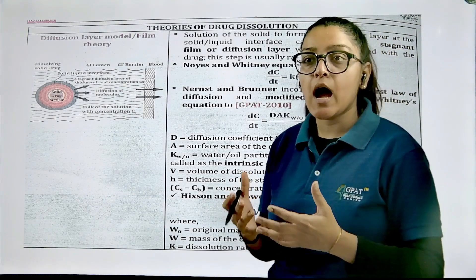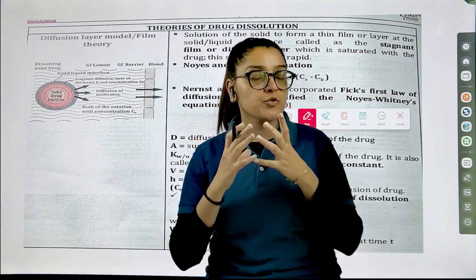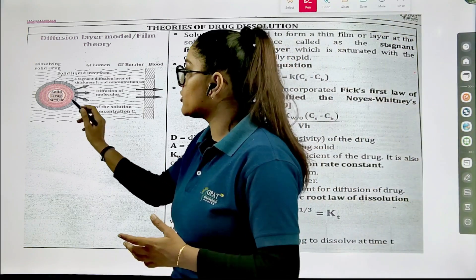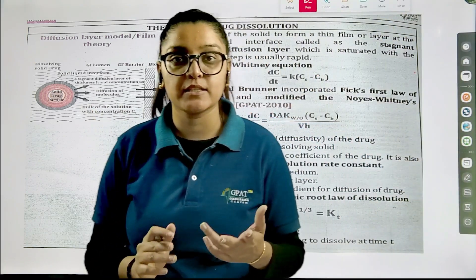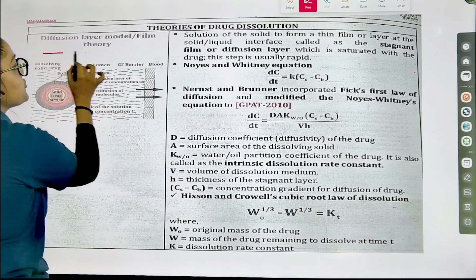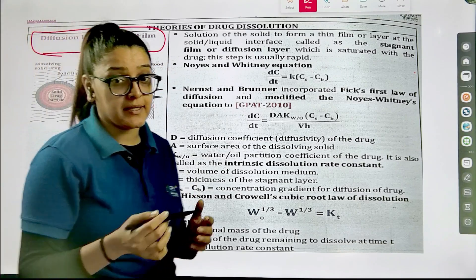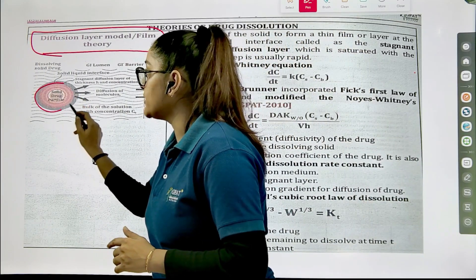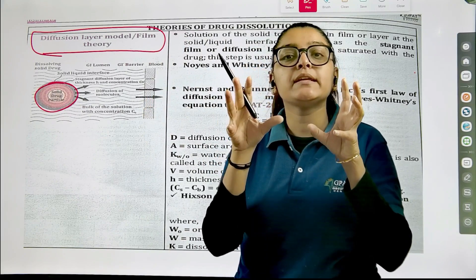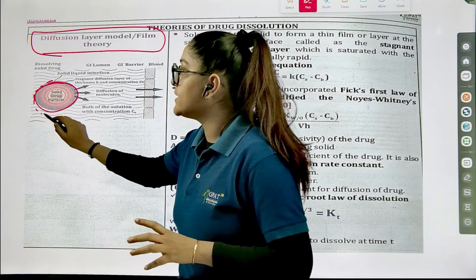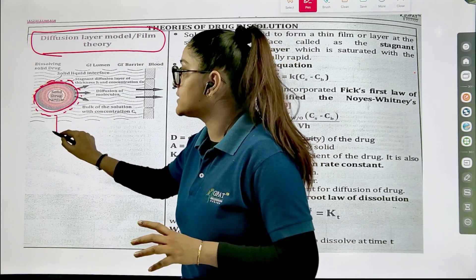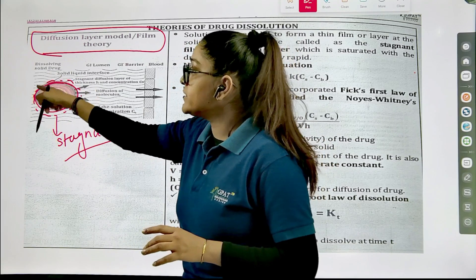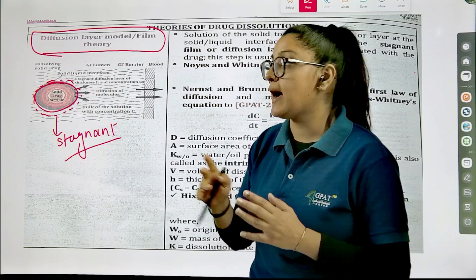Next, as I have already told you, the drug dissolution process involves how the drug is going to be released from the formulation, forming a layer around it. Whatever we discussed in the previous video was actually your diffusion layer model, or the film theory. Based on the film theory, you have a solid drug particle which is going to slowly release the drug, and the drug concentration in the layer that is formed — consider this layer as a stagnant layer.